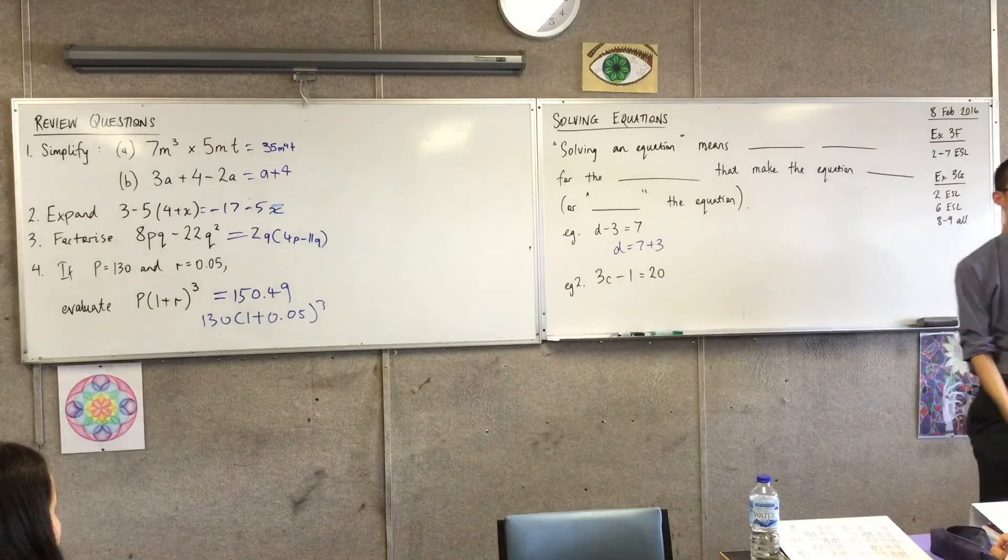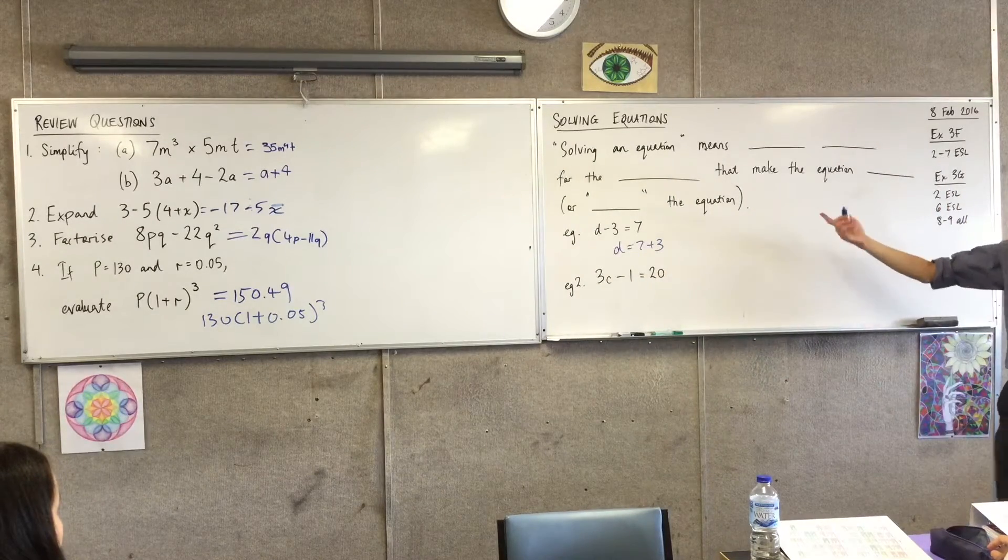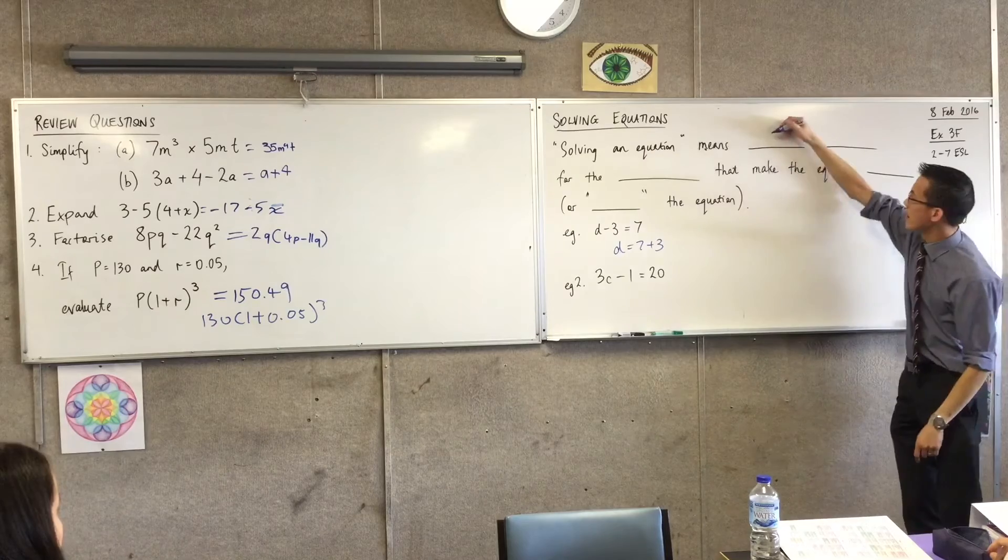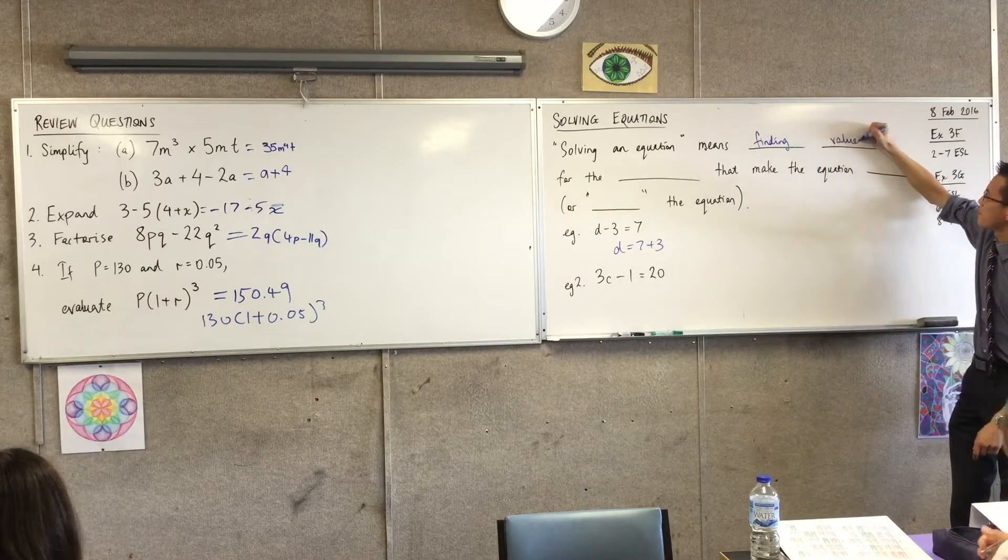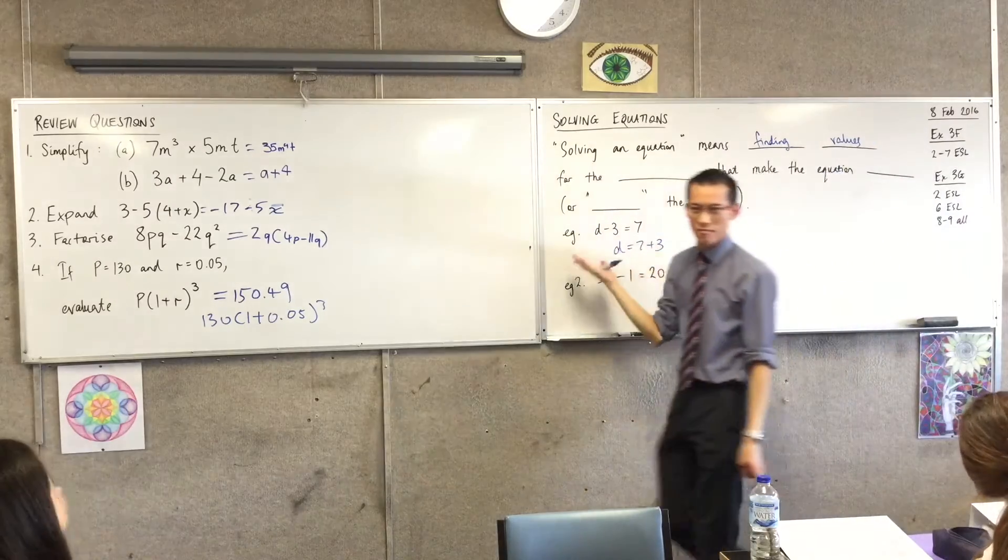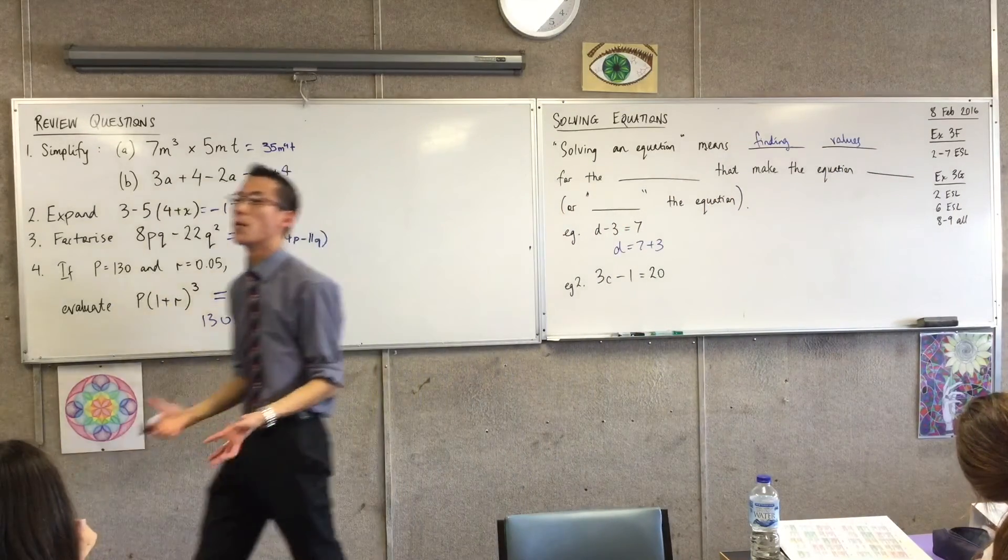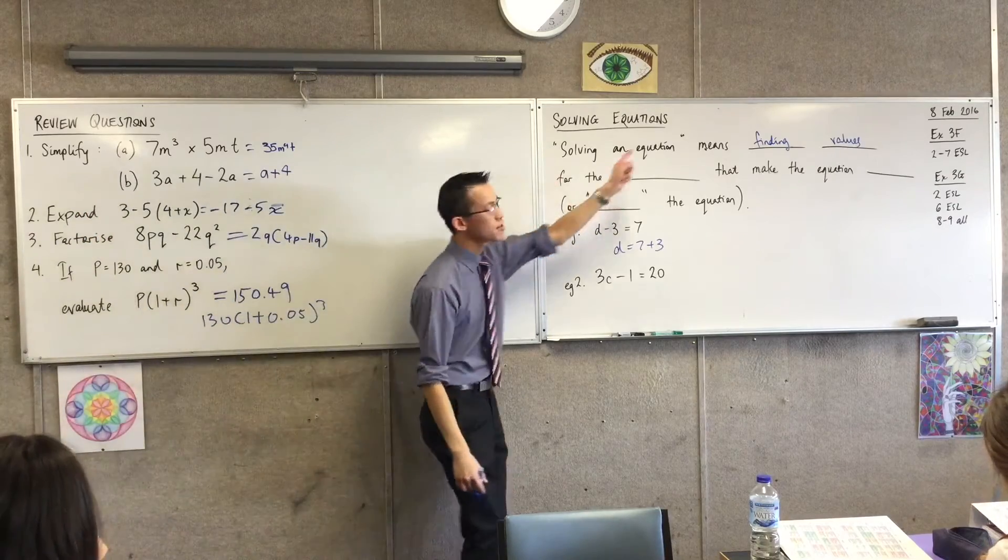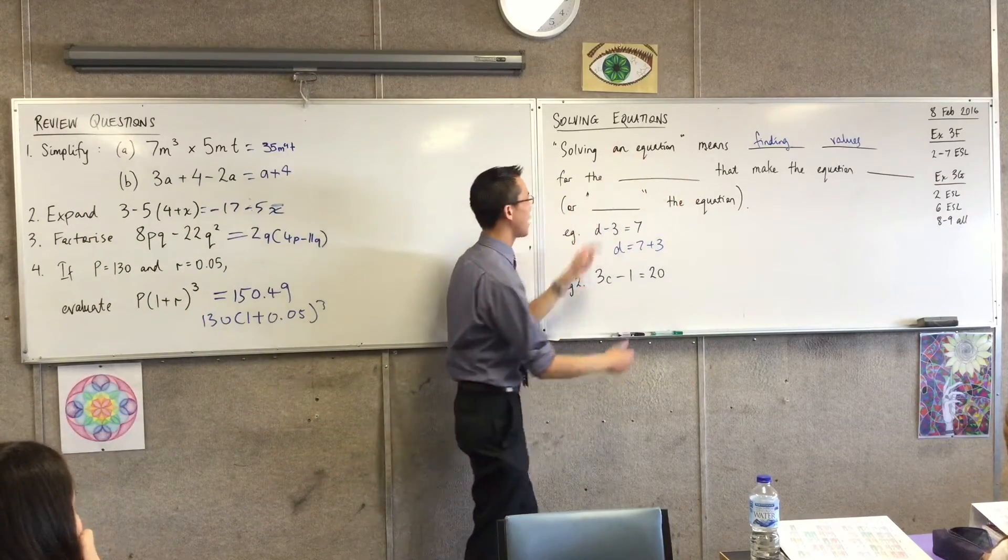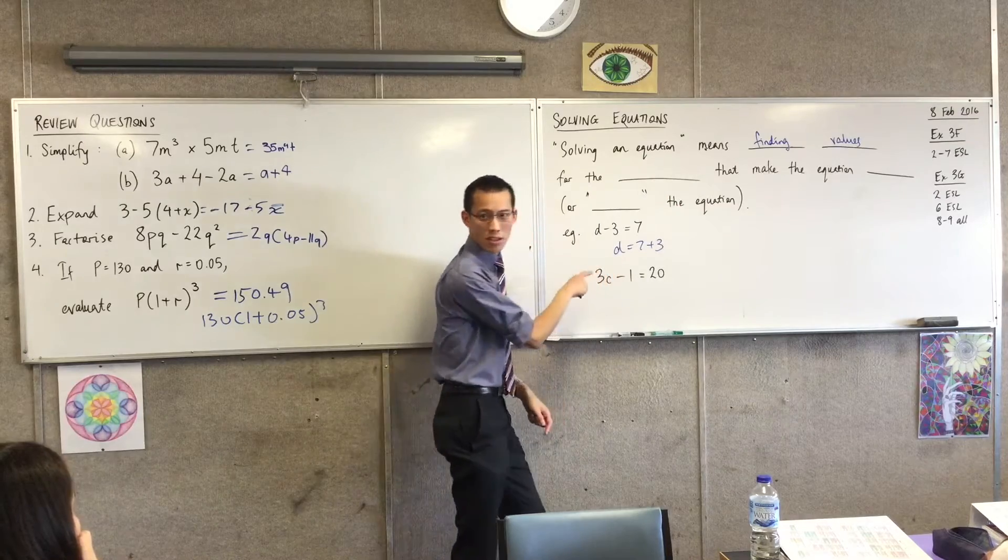Okay, just pause for a minute. Why would we do this? What's the point of doing this? And the answer is, what we're trying to do is we're trying to find values, right? Specifically, this letter, this pronumeral in there, we don't know what it's equal to, but if we shift things around, we can find its value. So solving equations means finding values for them, what did we say they were called again? Pronumerals.